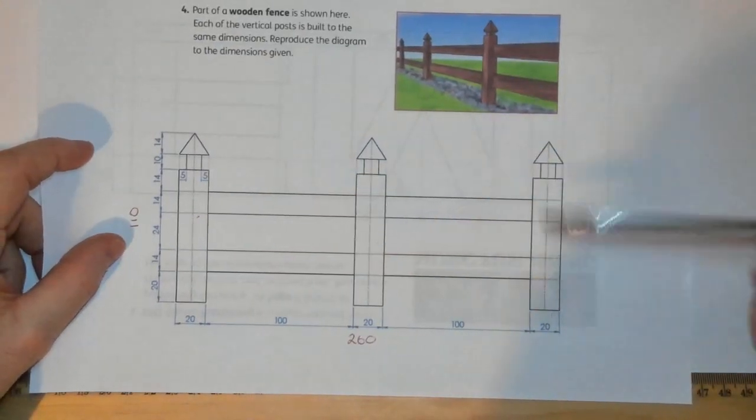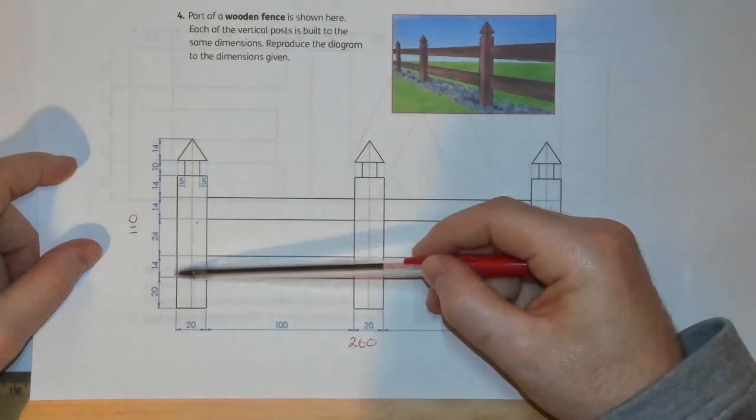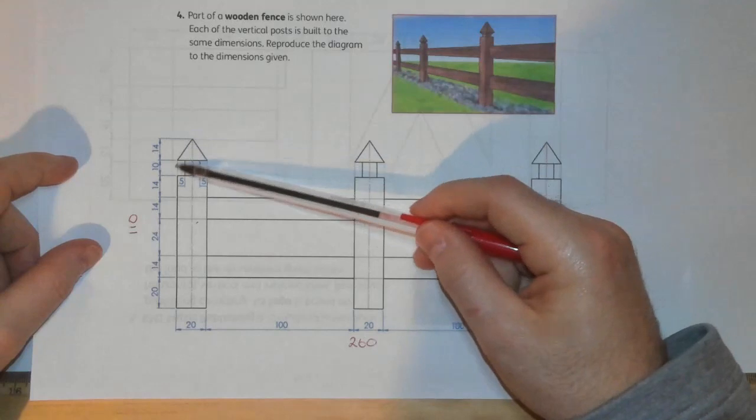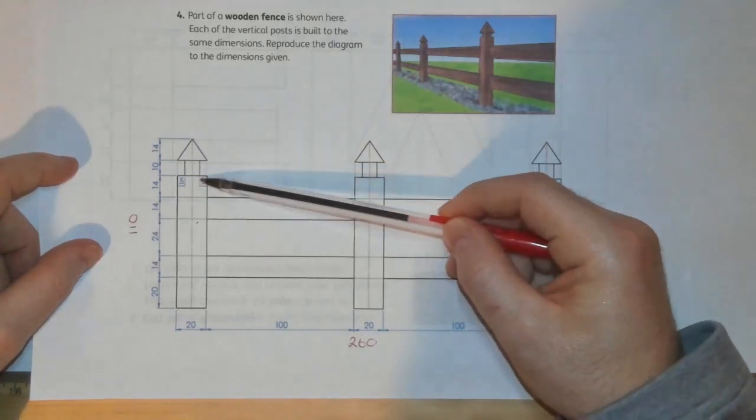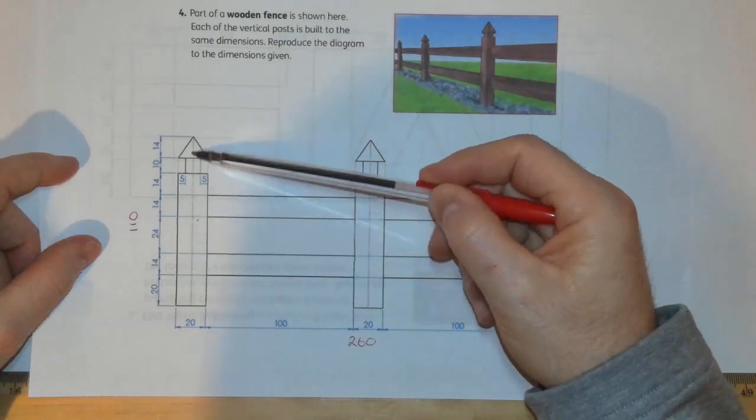So what we've actually got on here on our page now is the three stanchions for our posts - post one, two, and three. Now what I need to do is I need to put in my vertical height. So I have 20, 14, 24, 14, 14, 10, and then 14.